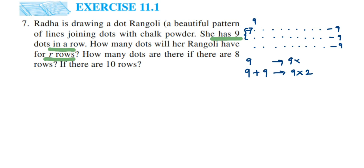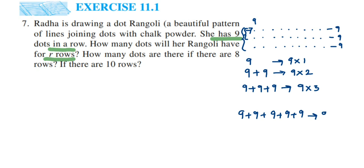If there are three rows it's nine into three. In general, if there are R rows, it will be nine into R. R is just a variable — it can take any value like 20, 30, or 100. So the number of dots in R rows is nine into R, or 9R.